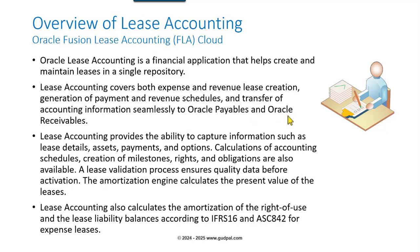Lease accounting also calculates amortization of the right-of-use and the lease liability balances according to IFRS 16 and ASC 842 accounting standards for expense leases. These accounting standards are fairly new, introduced a couple of years ago, to ensure companies adhere to standards and can calculate the present value of a lease at any time. Now I'm going to jump into Fusion Lease Accounting Cloud and show you all these points in the GUI.